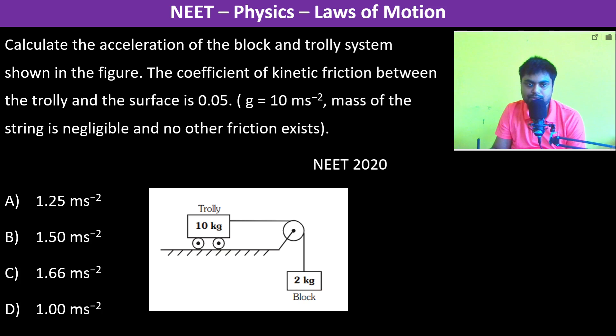Calculate the acceleration of the block and trolley system shown in the figure. The coefficient of kinetic friction between the trolley and the surface is 0.05, g equals 10 meter per second squared, mass of the string is negligible.